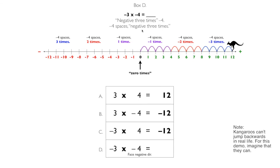Notice this about box D: even though the kangaroo was facing the negative direction, she ended up in positive territory because she was jumping backwards.